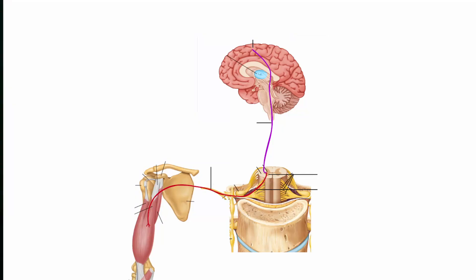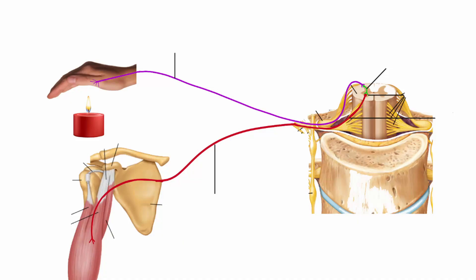Now let's say it's getting too hot and you want to move your finger away. The information about the movement starts in the motor area in the cortex. From there, it is passed down to the spinal cord by the upper motor neuron. Once it reaches the level of your arm, the upper motor neuron connects with the lower motor neuron in the ventral horn. The lower motor neuron exits the spinal cord by the ventral root and the information goes directly to the muscle — and you move the muscle. All of this takes time to process, so in an emergency — like burning your finger — the brain may be bypassed. The information goes from the first-order neuron to an interneuron in the spinal cord, and a signal is sent directly to the muscles through the motor neuron. This is called the reflex arc.